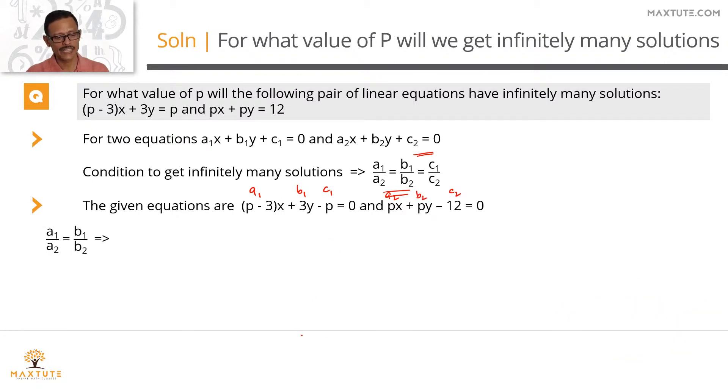Let's start with the first process: a1 by a2 equals b1 by b2. So that would translate to p minus 3 divided by p is equal to 3 by p. Cross multiply and solve for it. So we'll have p times p minus 3 equals 3p. Expand this, we'll get p square minus 3p on the left hand side.